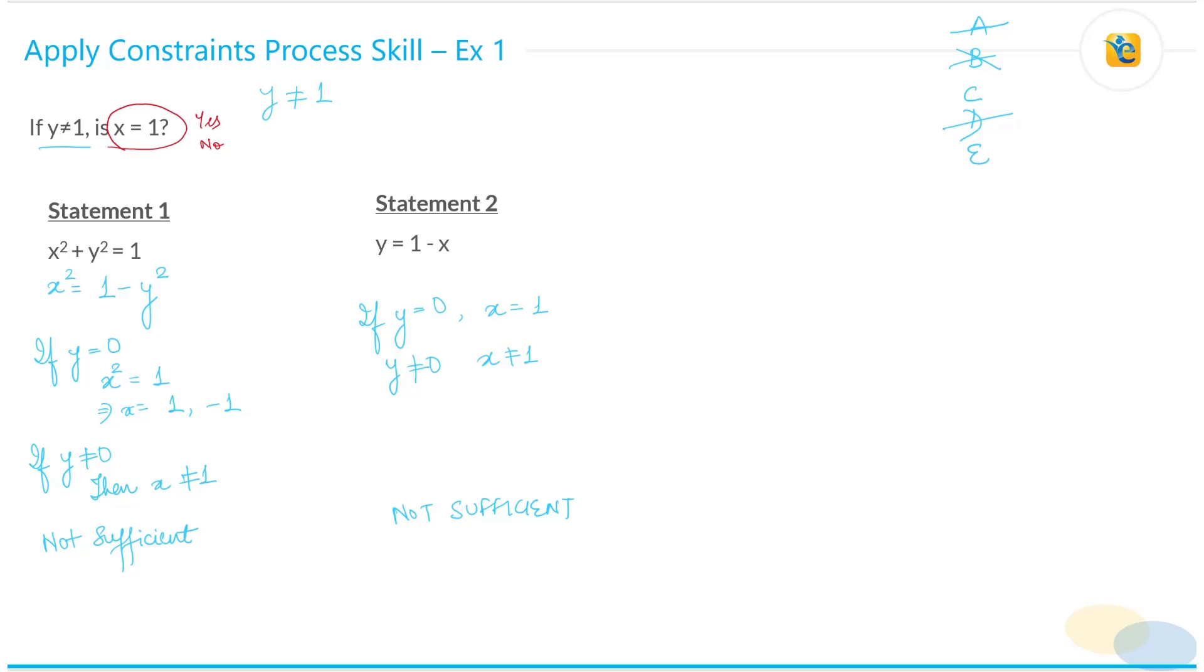So now we have to look at statements 1 and 2 together. Processing statements 1 and 2 together we can actually solve for x. So let's do that. You have y in terms of x and then you have a quadratic equation in x and y. So let's substitute y over here.